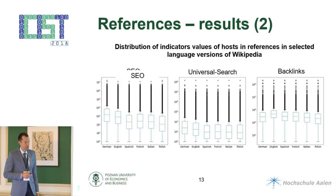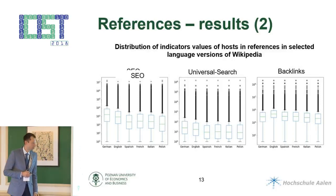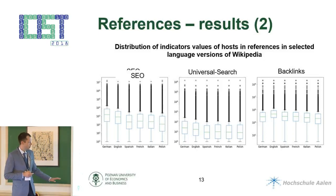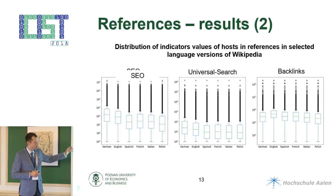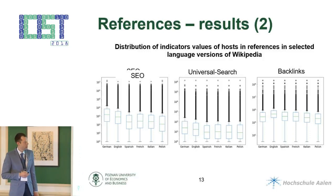Other indicators we took into account, as described earlier by Ralf, are the SEO metric, universal search, and backlinks. These graphs present the distribution of these metrics in specific language versions. We see that in German, the values of the SEO metric and universal search are higher than in other languages, but in the case of backlinks, the English version has the highest values.